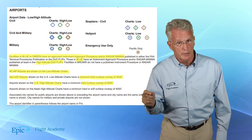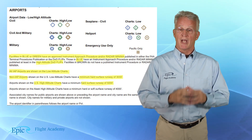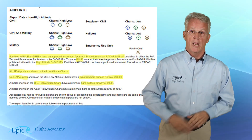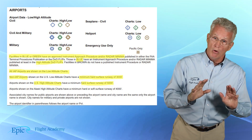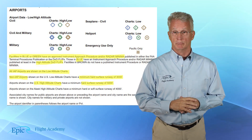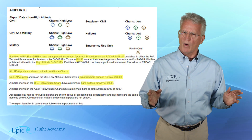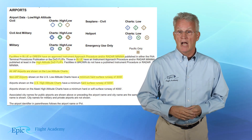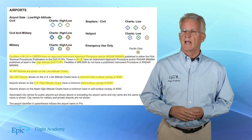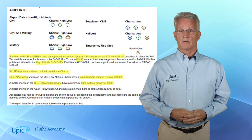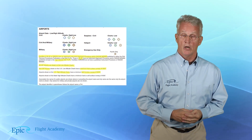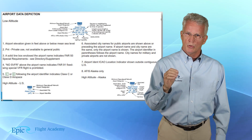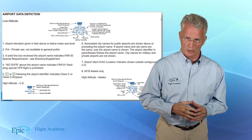Airports shown in blue and green have instrument approach procedures and/or radar minima. Airports shown in brown have no instrument approach procedure or radar minima — but they are shown because they have a hard surface runway of at least 3,000 feet.